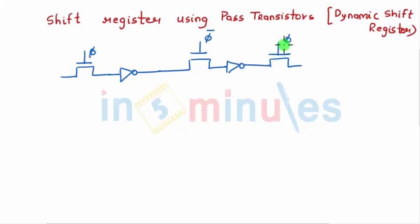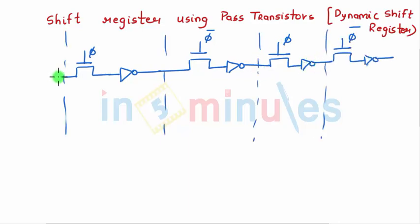Let's see what's going to happen. Let's say I have an input A. When phi equals 1, let's name all the pass transistors also: N1, N2, N3, and N4.